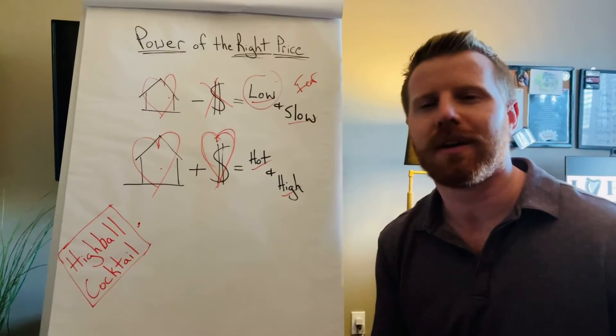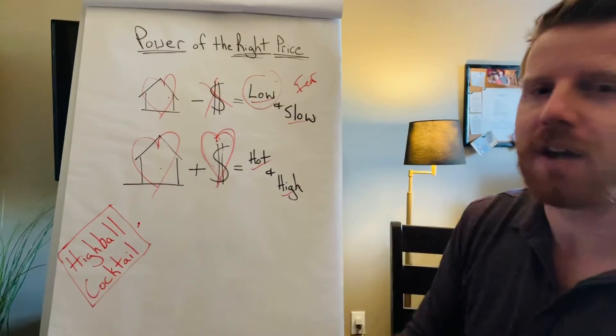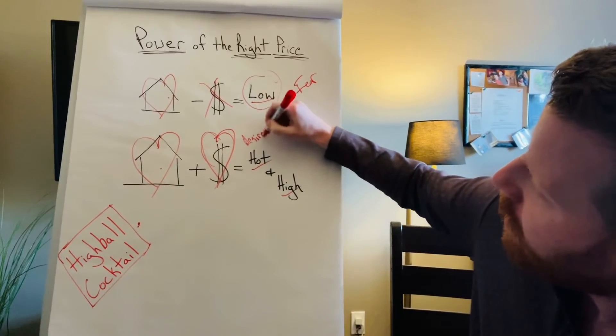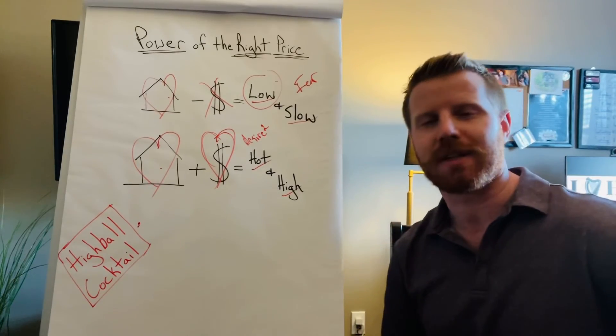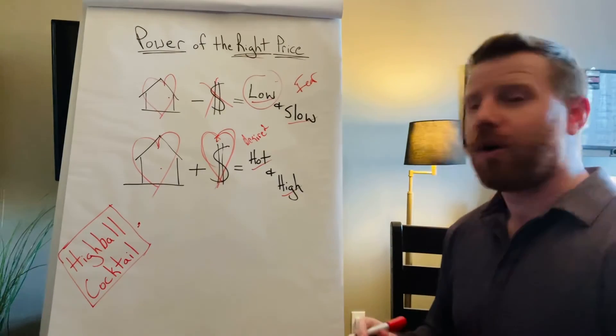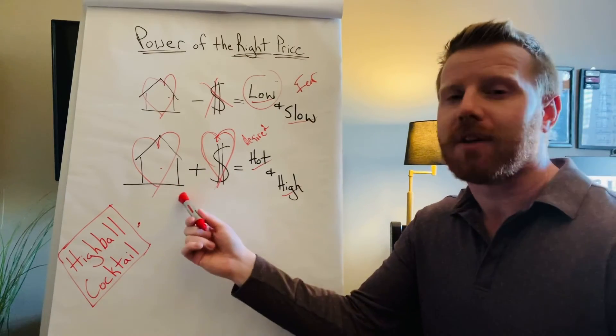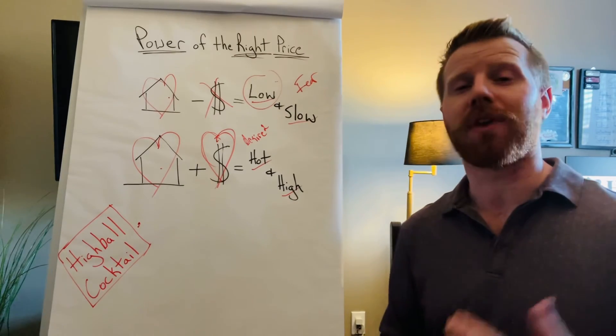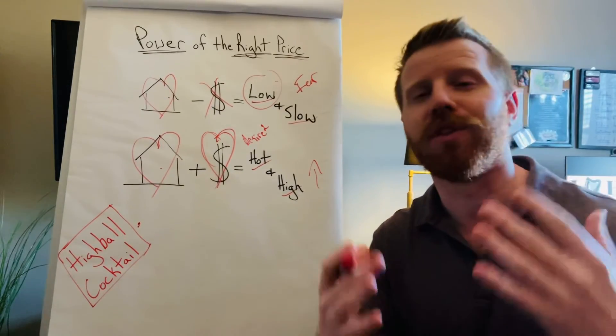But for the highball cocktail, look what we have here. We have desire for the house and we have desire for the price. So we have desire squared. But then, a third emotion kicks in that trumps everything. And that is the buyers start going, whoa, that's a good price. Whoa, that's a good house. Whoa, this house is going to go fast. And we're going to have to come in with our highest and our best. Because fear of loss kicks in. And there's nothing more powerful for a seller to get top dollar.